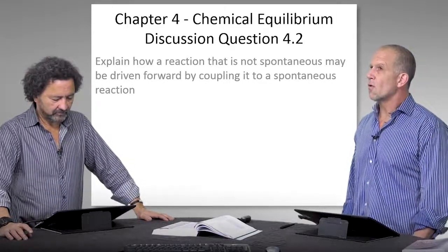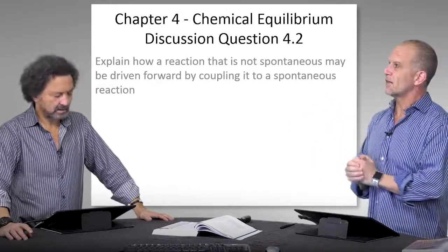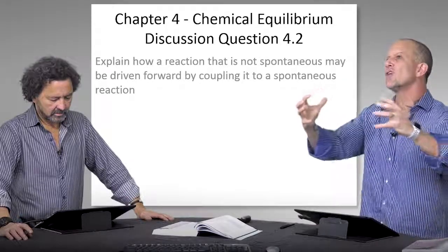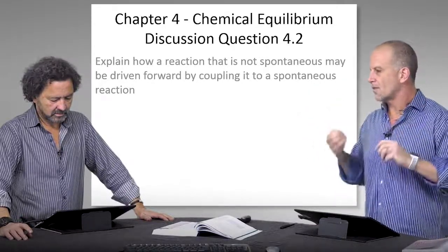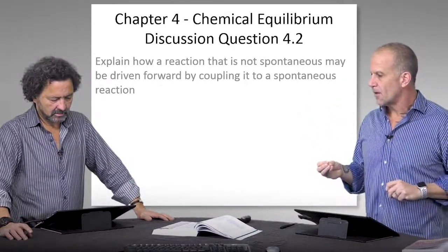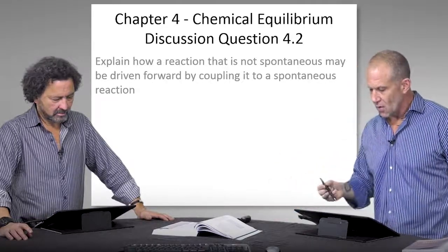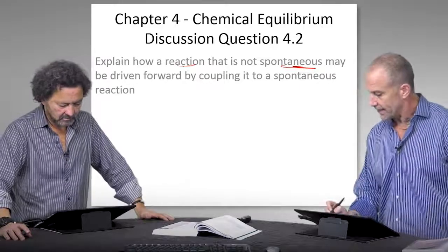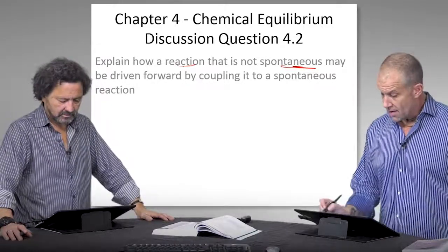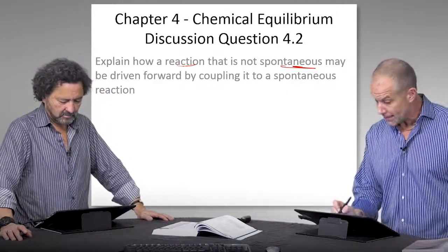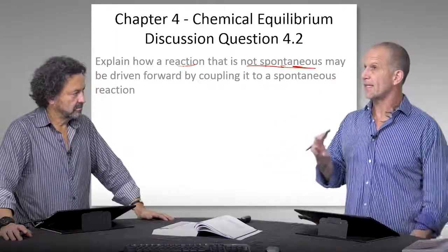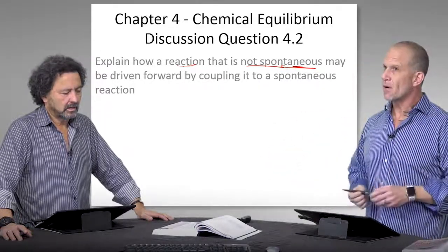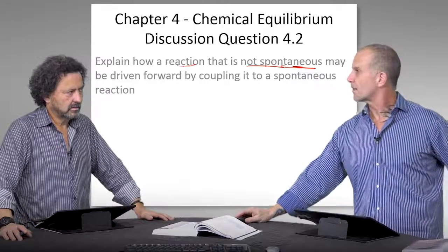And so discussion question number two is explain how a reaction that is not spontaneous may be driven forward by coupling it to a spontaneous reaction. And I think the reason we picked this to look at is because this is something that's very relevant, especially in biochemistry. So discussing this in a very general term, it touches on a lot of the key aspects of this chapter, which is what does it mean for a reaction to be spontaneous versus not spontaneous.